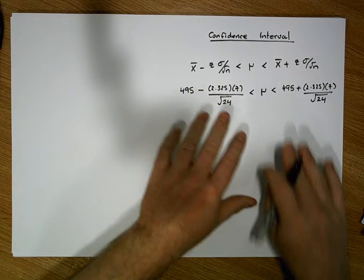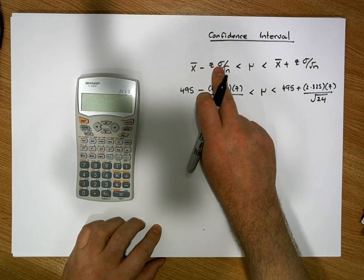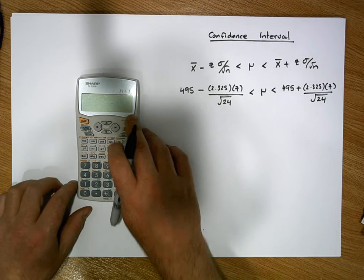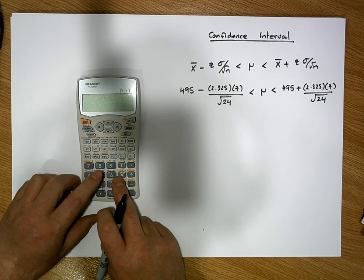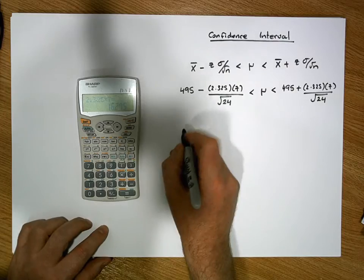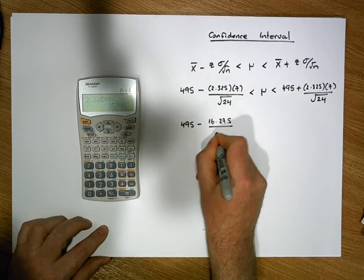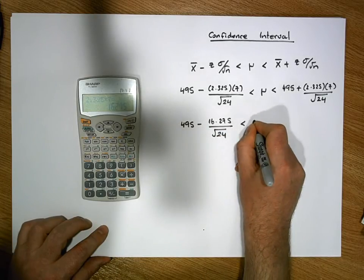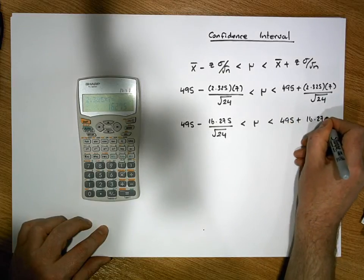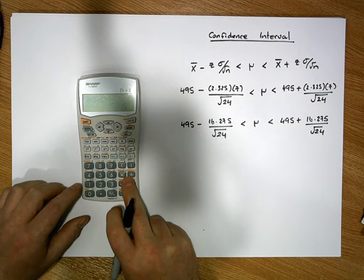Now this is just arithmetic. Let's calculate z times sigma over the square root of n first. That's 2.325 times 7 — the numerator gives us 16.275. So this becomes 495 minus 16.275 divided by the square root of 24, which must be less than mu, which must be less than 495 plus 16.275 over the square root of 24.